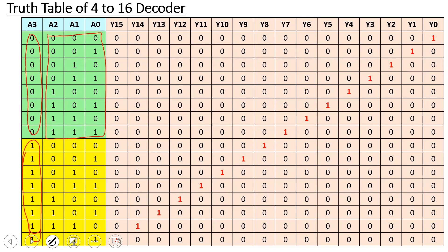When a3 is equal to 0, the first 3-to-8 decoder is activated via the enable signal. When a3 is equal to 1, the enable signal activates the second 3-to-8 decoder. So the enable signal controls which of the two 3-to-8 decoders is active.